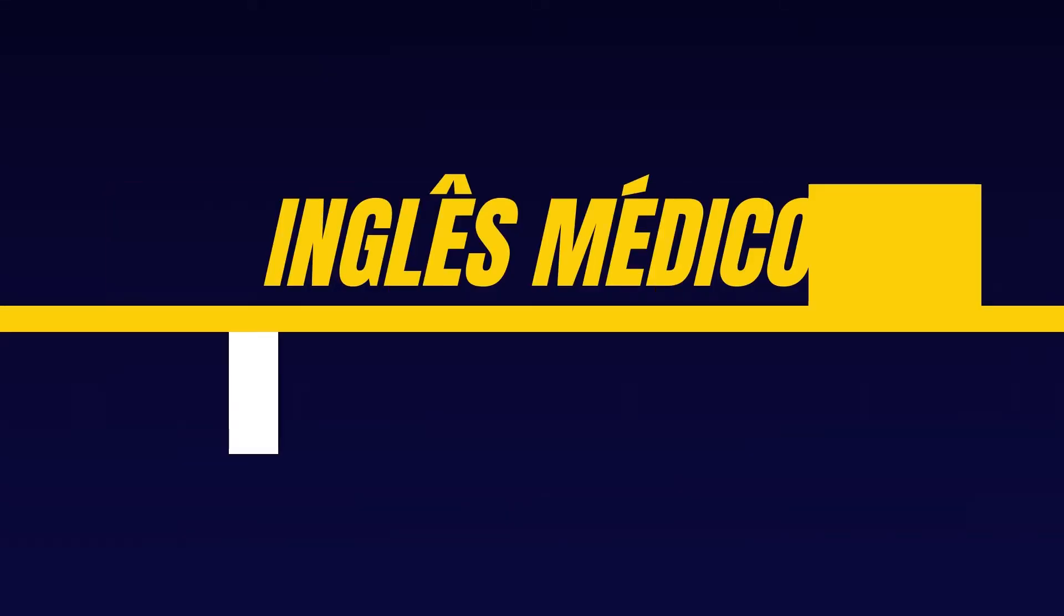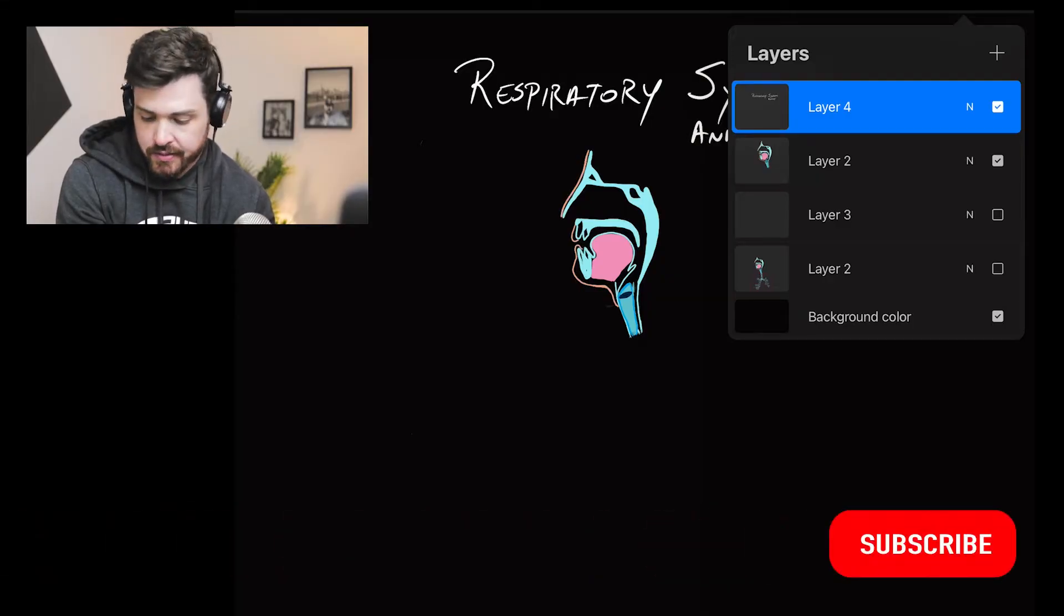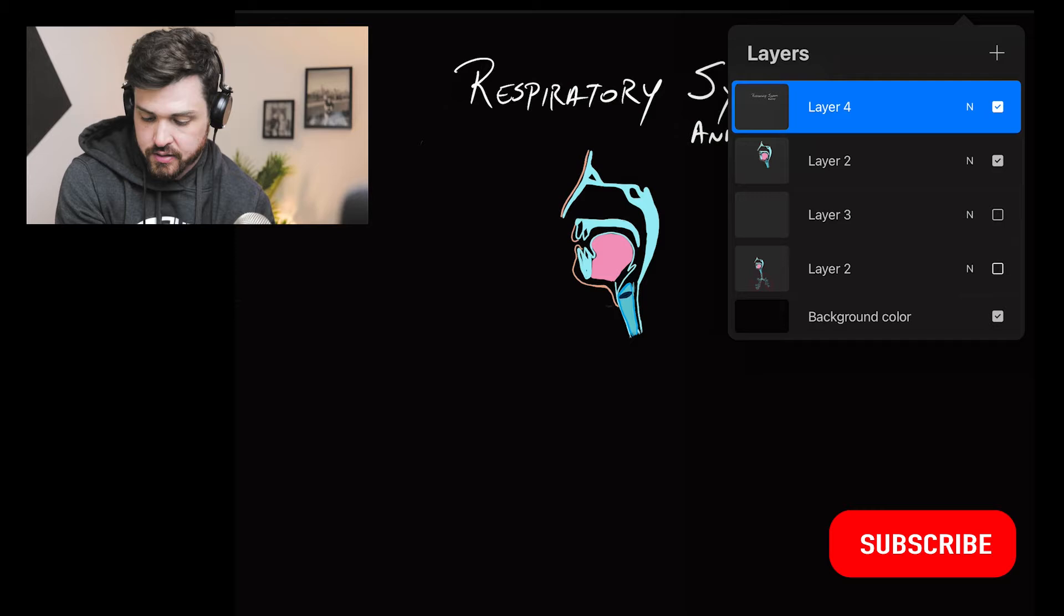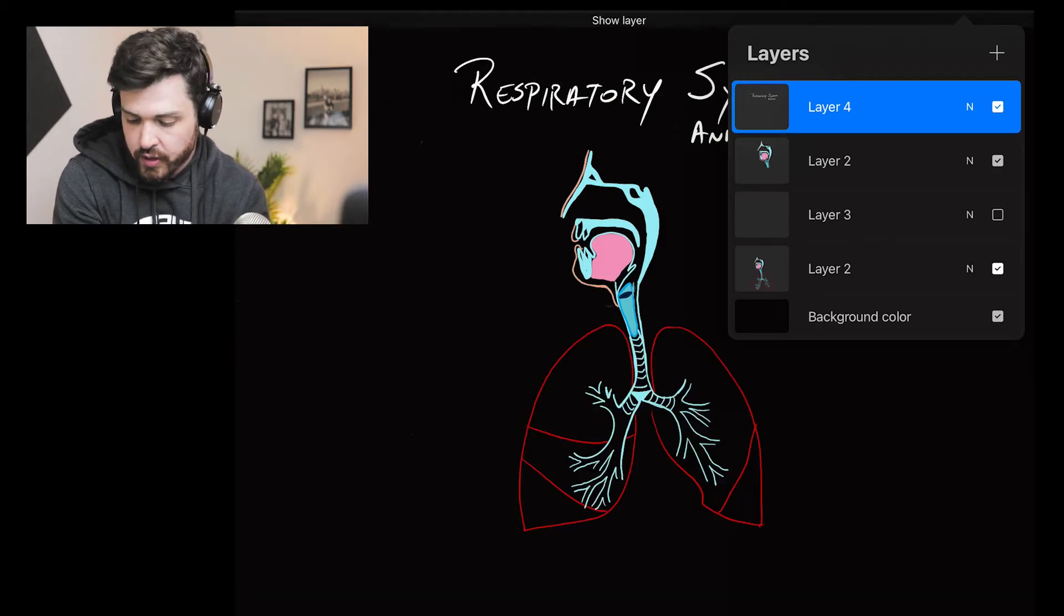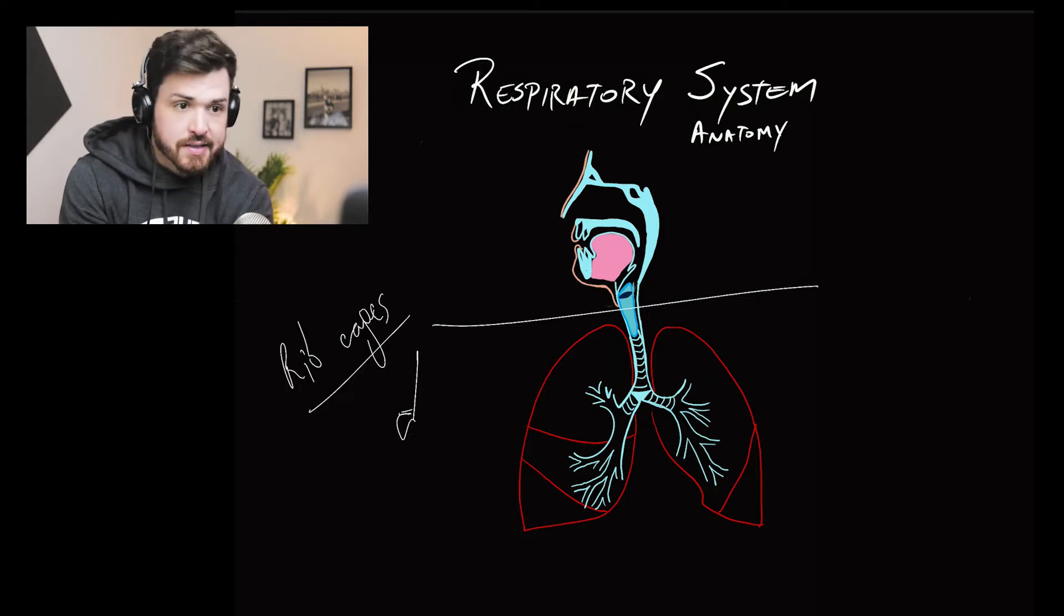Hello there, let's talk about the respiratory system anatomy. The respiratory system can be divided into the lower and the upper respiratory tract. So the lower respiratory tract is everything that's inside the rib cages, the rib cages or the thoracic cage.